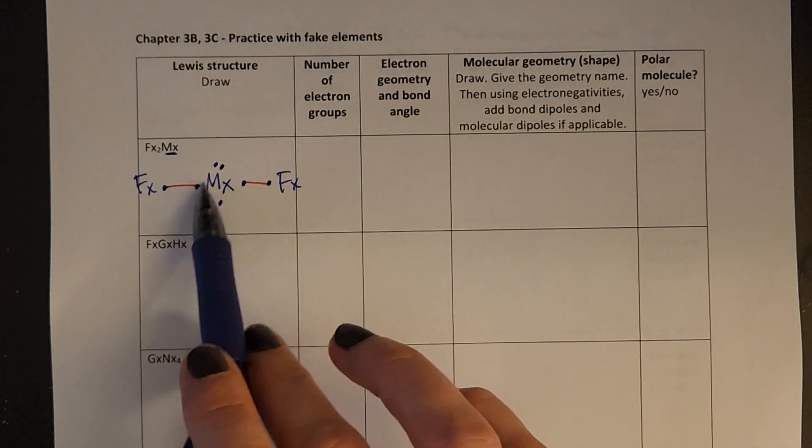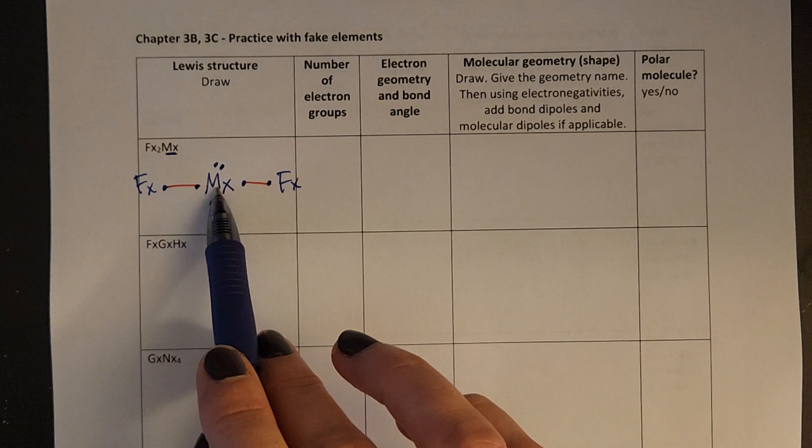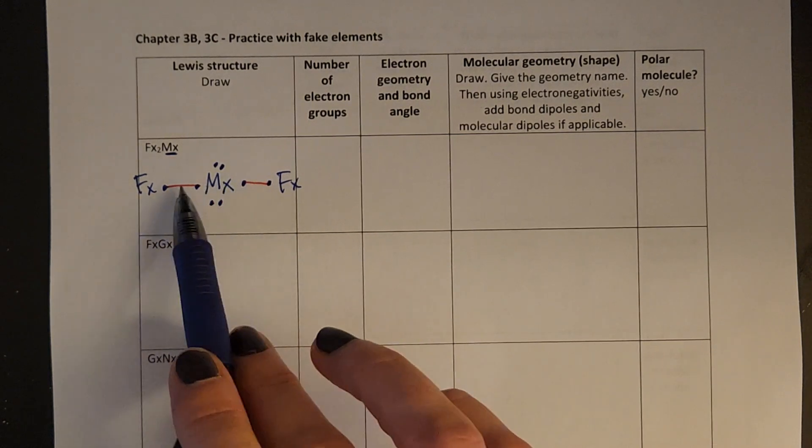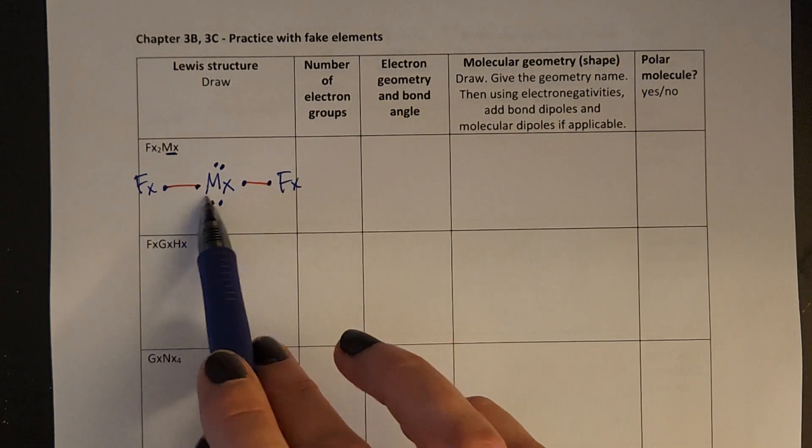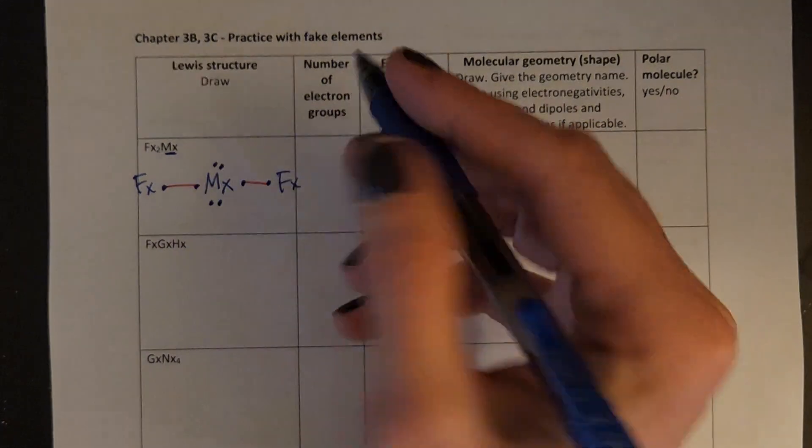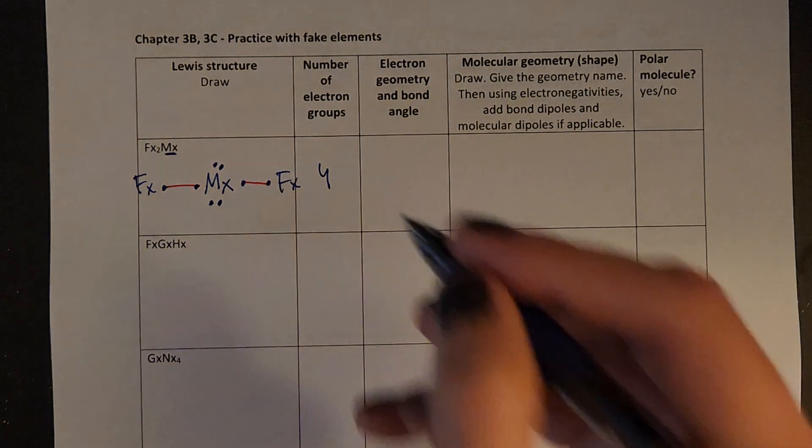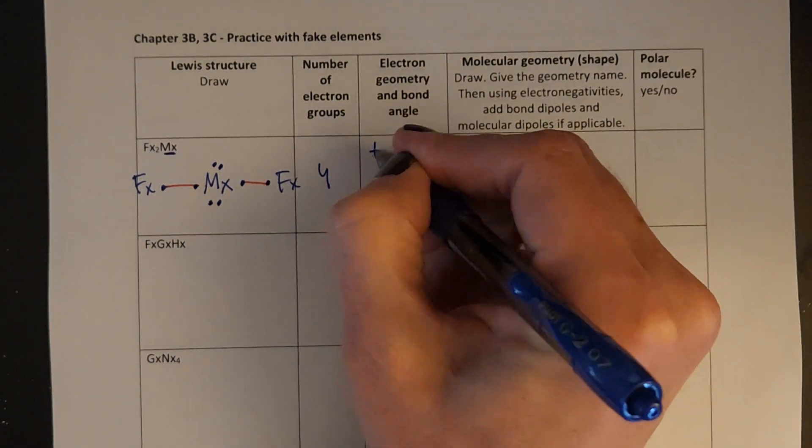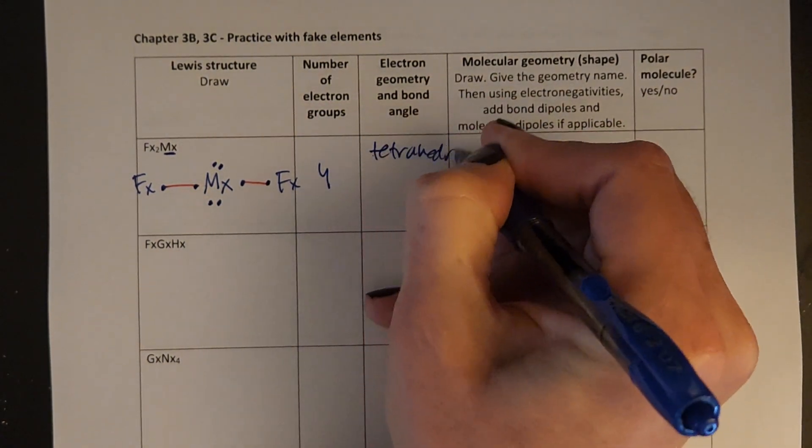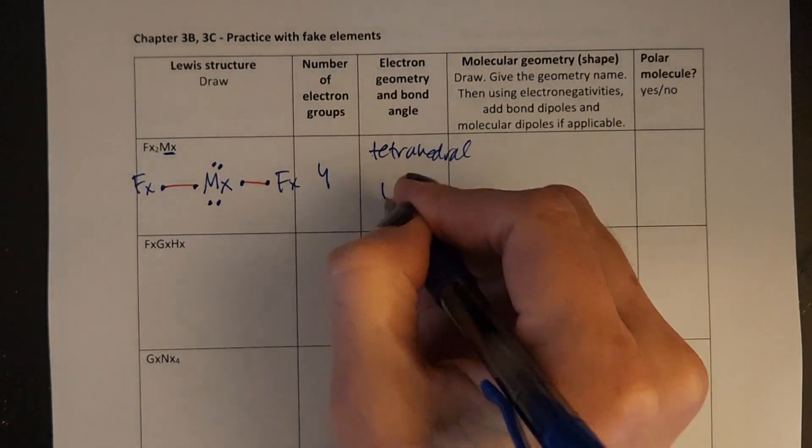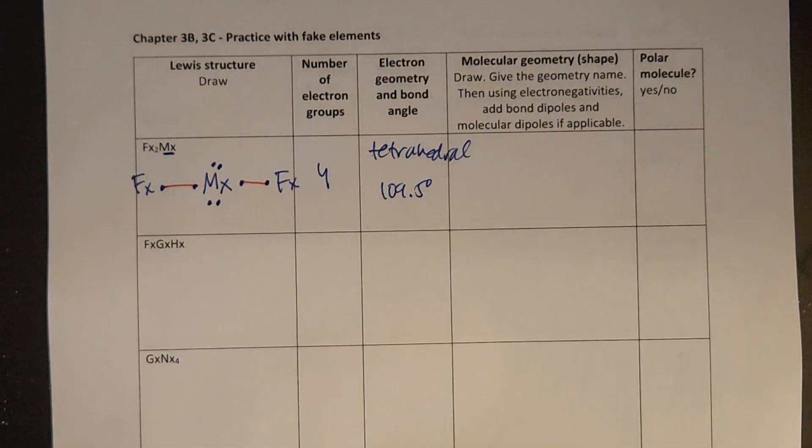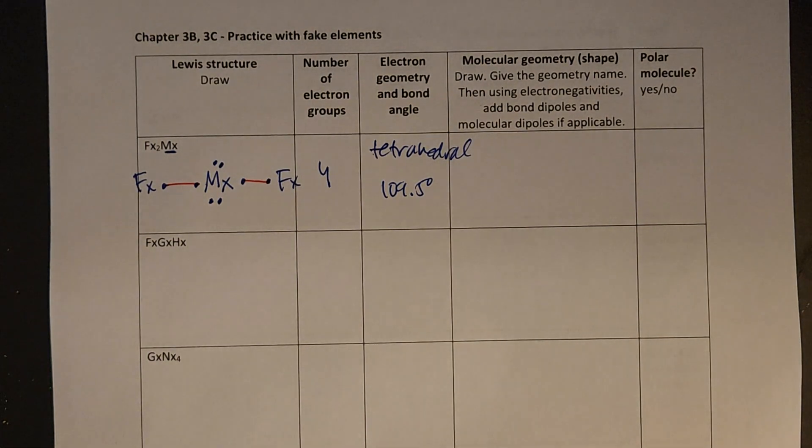Now, number of electron groups is going to be around the center atom, so I'm looking for one, two, three, four. That's one atom, two atoms, a pair, and a pair. So four electron groups always is an electron geometry of tetrahedral, this is just like the real molecules we've been working on, and always leads to a bond angle of 109.5 degrees, or around that.